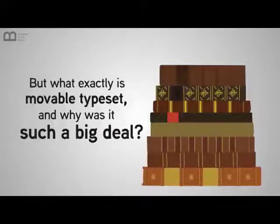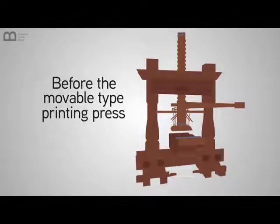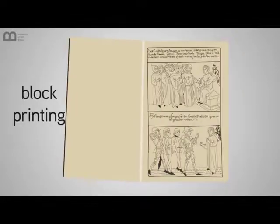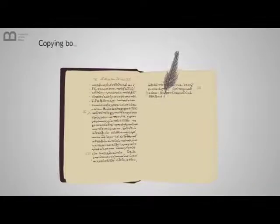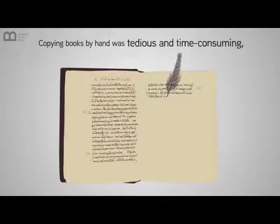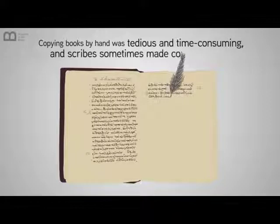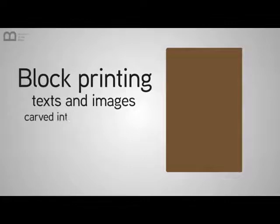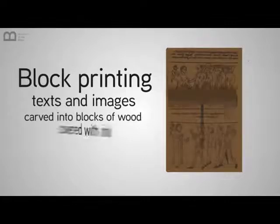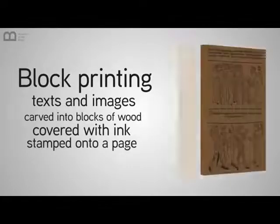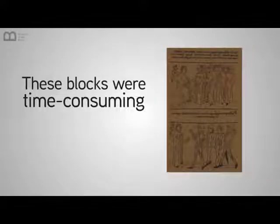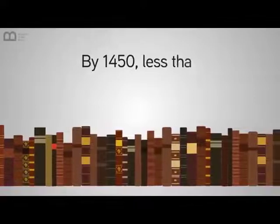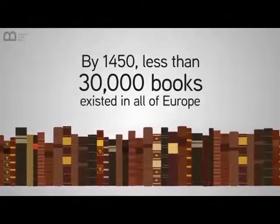This was such a big deal. Before the movable type printing press was invented, books were expensive and either copied by hand or made using block printing. Copying books by hand was tedious and time-consuming, and scribes sometimes made copying errors. Block printing meant that text and images had to be carved into blocks of wood, then covered with ink and stamped onto a page. These blocks were time-consuming to create and use. By 1450, less than 30,000 books existed in all of Europe.